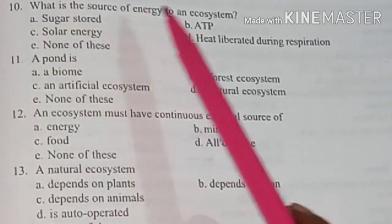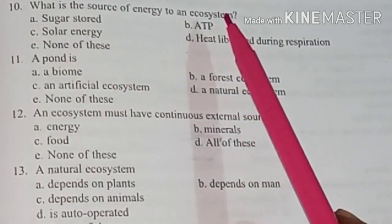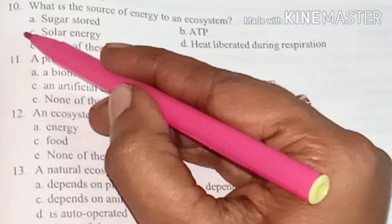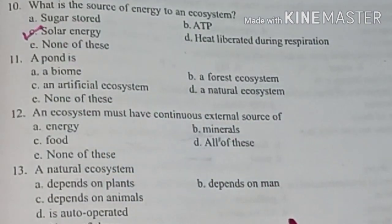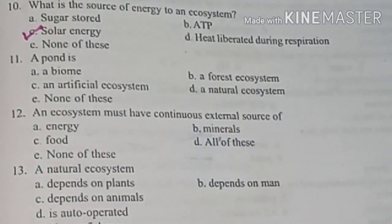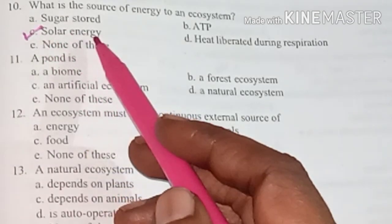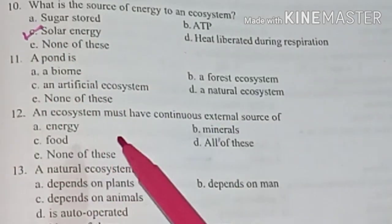What is the source of energy to an ecosystem? Answer option C: Solar energy.